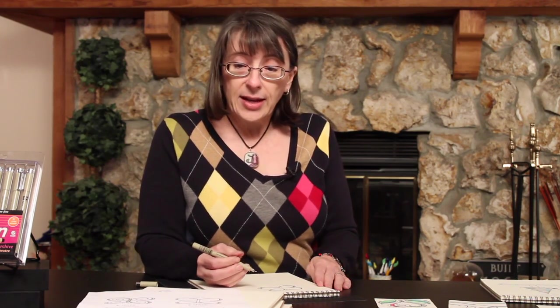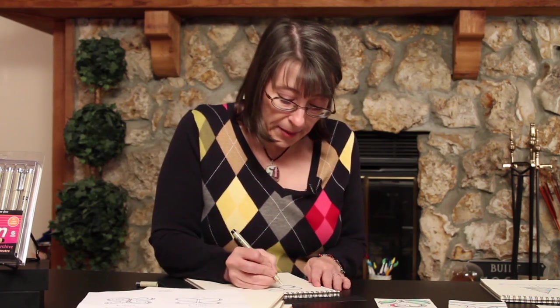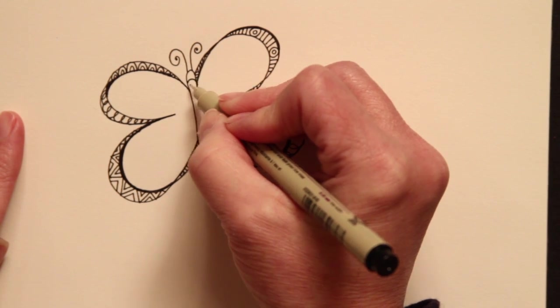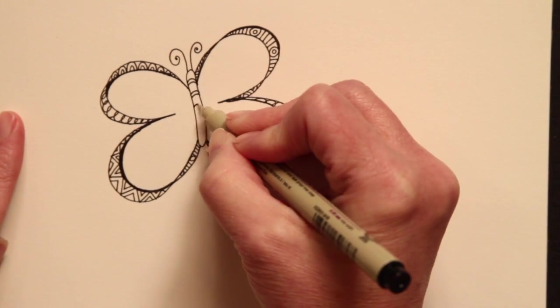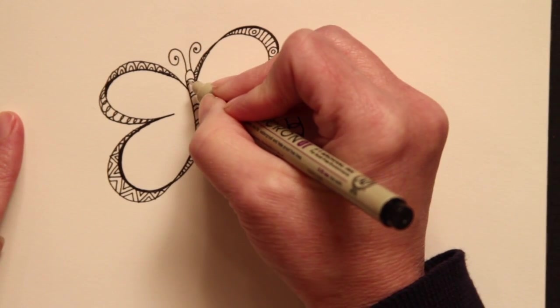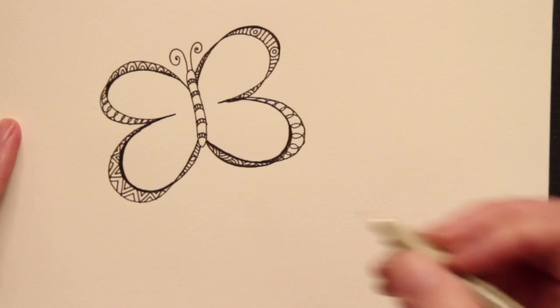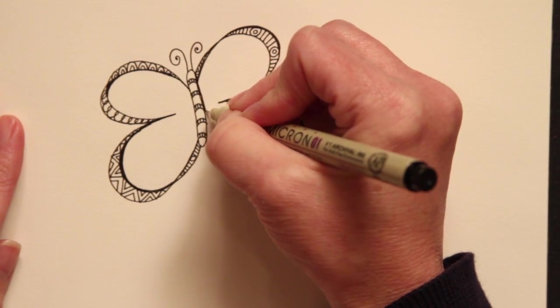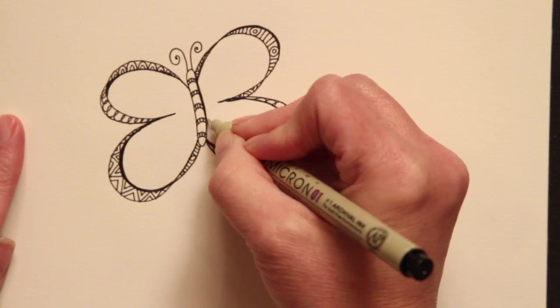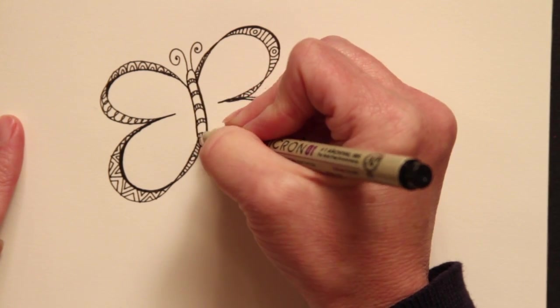Now I think we need to decorate our caterpillar body. Do two rounded lines like this. And then come back and add little lines there. And again, give a little bit of weight. It makes that stand out.